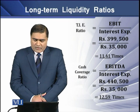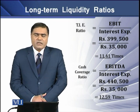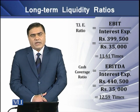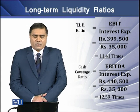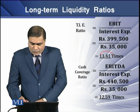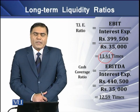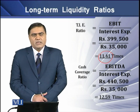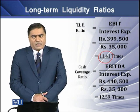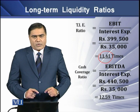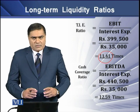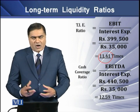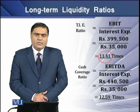If we have EBIT of 399,000 and interest expense of 35,000, we divide EBIT by interest expense and we get a ratio of 11.41 times.